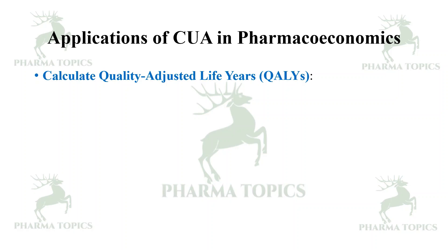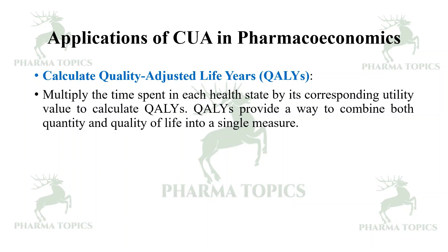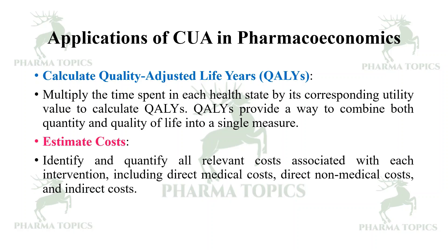Then calculate the QALYs: multiply the time spent in a health state by its corresponding utility value to calculate the QALYs. QALYs provide a way to combine both quantity and quality of life into a single measure. Then estimate the cost — identify and quantify all relevant costs associated with each intervention, including direct medical costs, direct non-medical costs, and indirect costs.